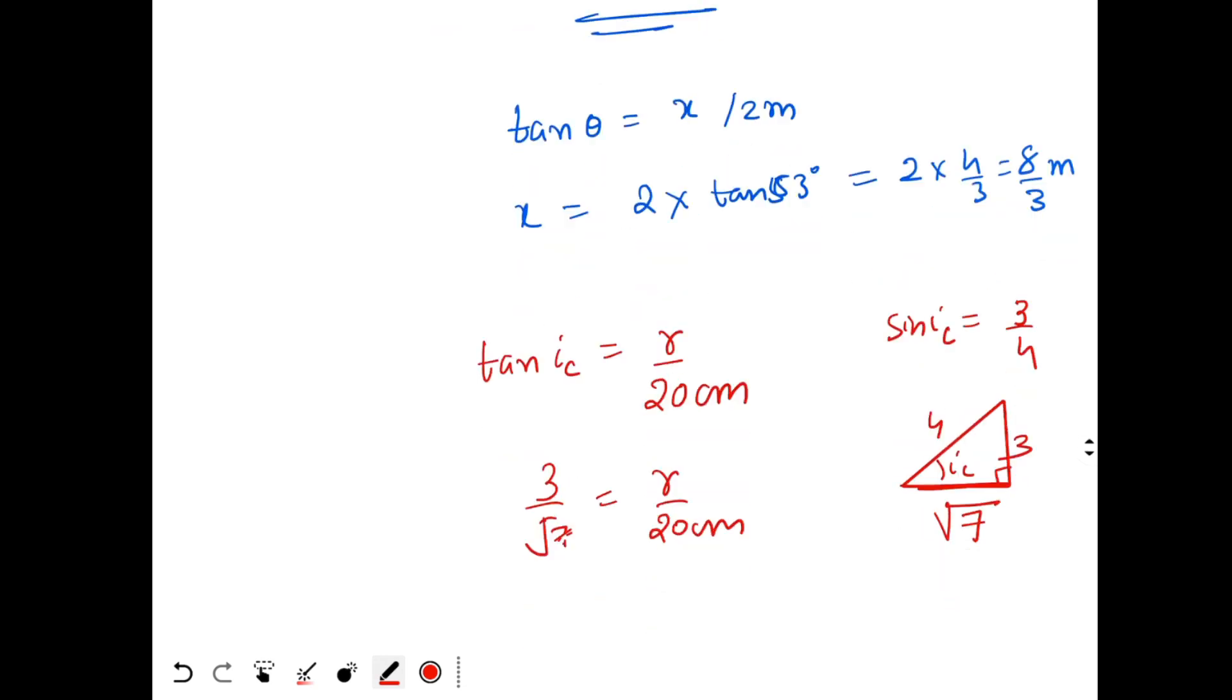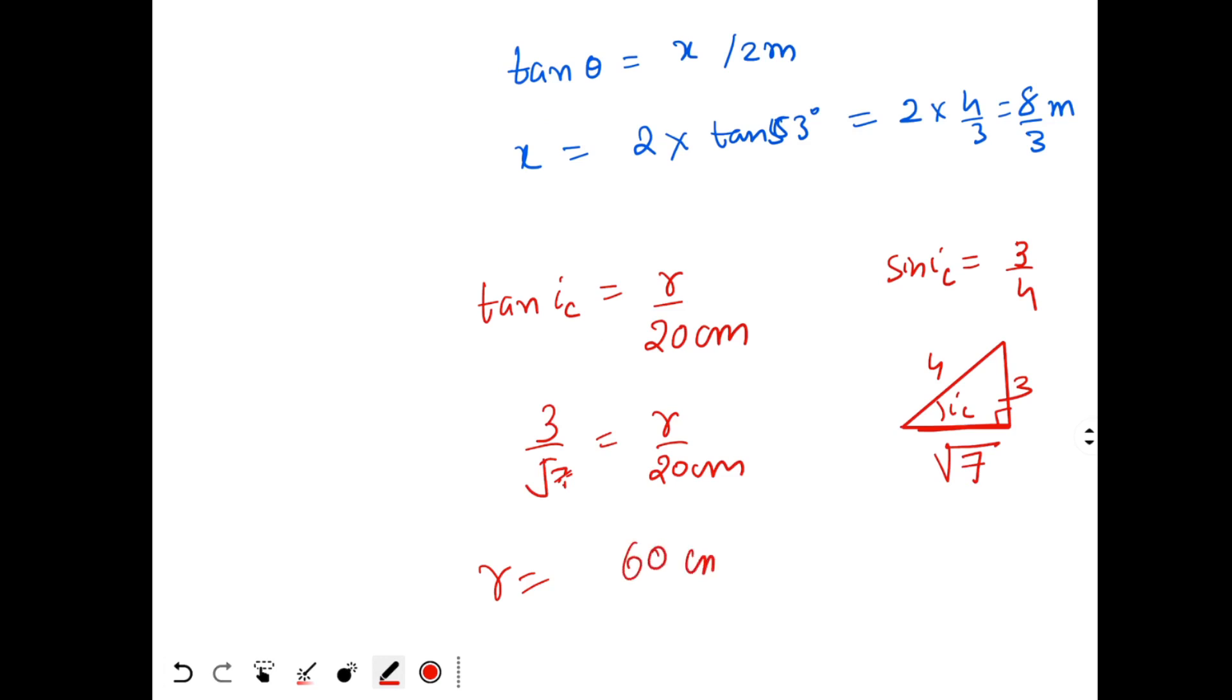So we get r equal to 20 into 3, 60 centimeters by root 7. So that's your answer.